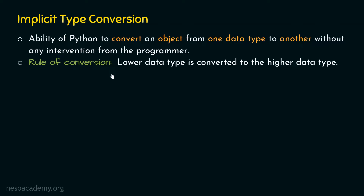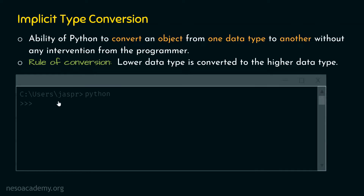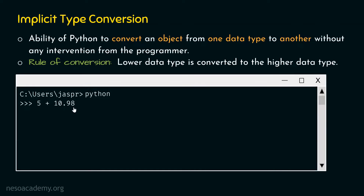Let's understand how implicit type conversion works and in which scenarios it happens. Let's open our command prompt and type 5 plus 10.98. The value 10.98 is a floating point value, while 5 is an integer. These two values cannot be added as-is; we need to make them the same type. If we hit enter, we get 15.98. Python has implicitly converted the integer to floating point — this is implicit type conversion.